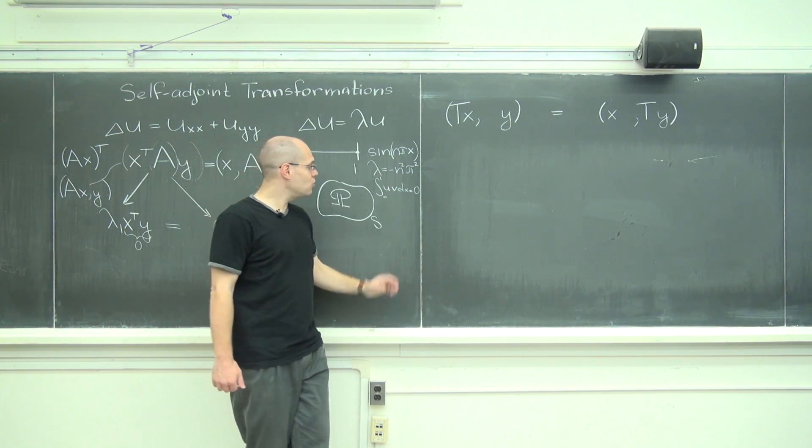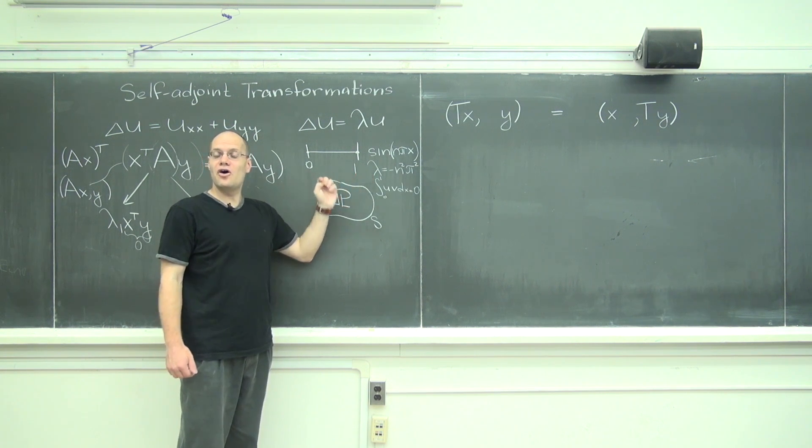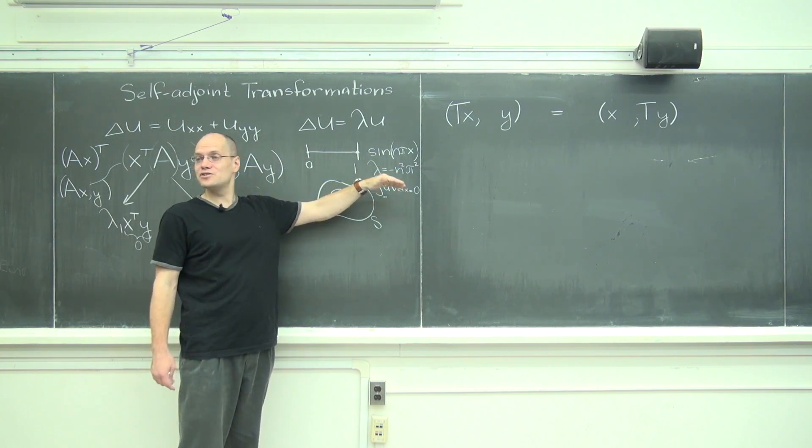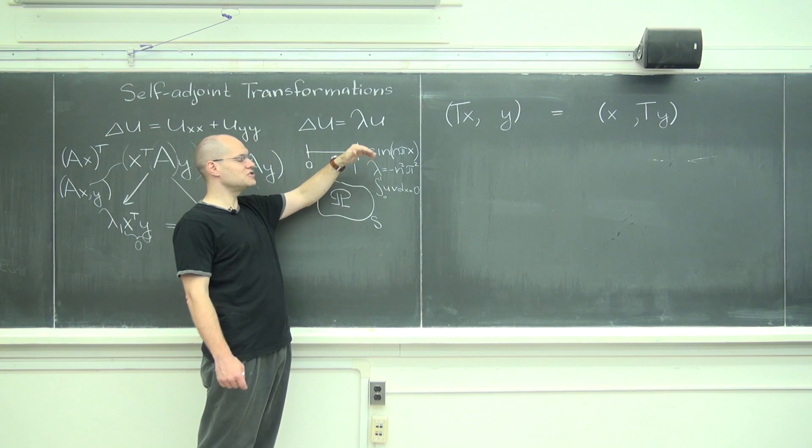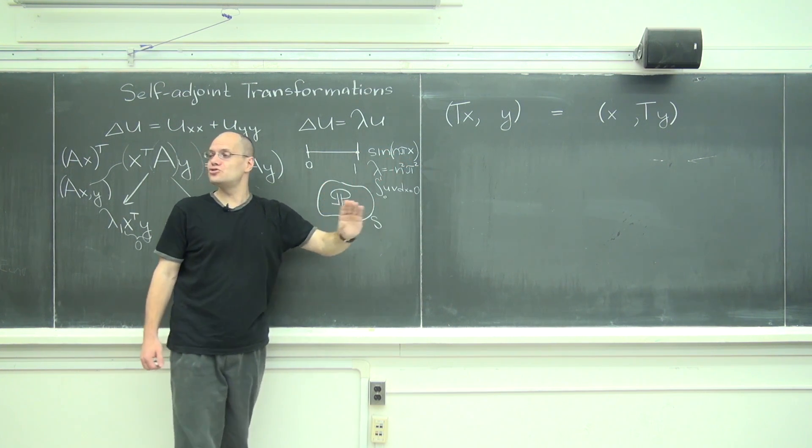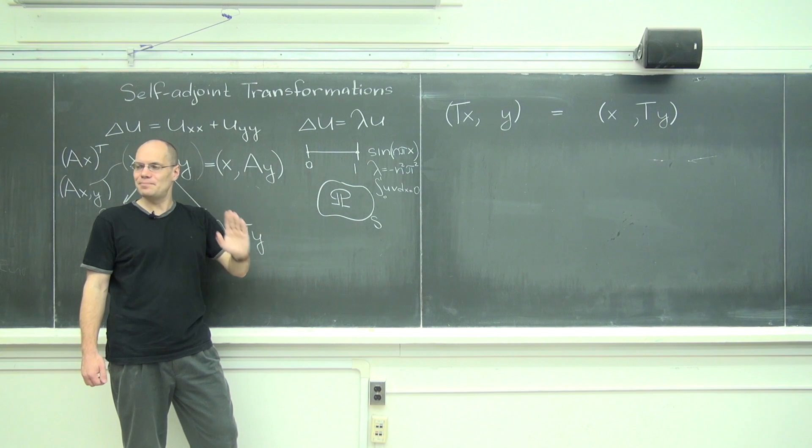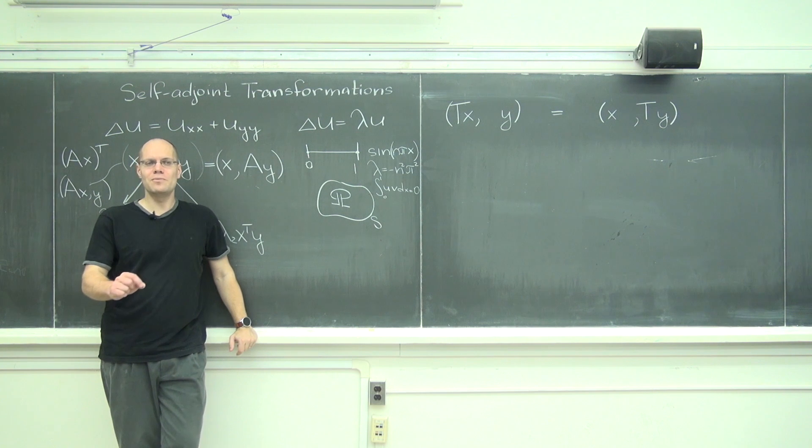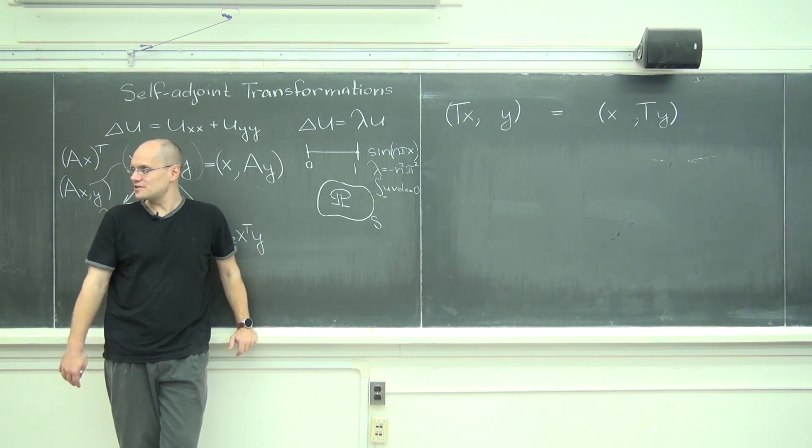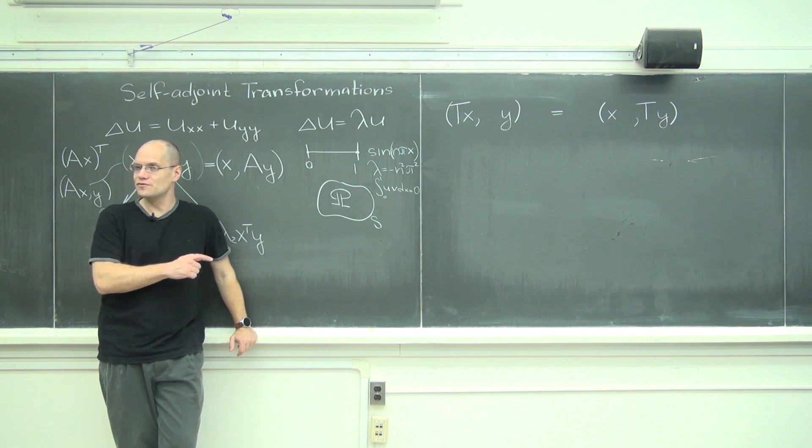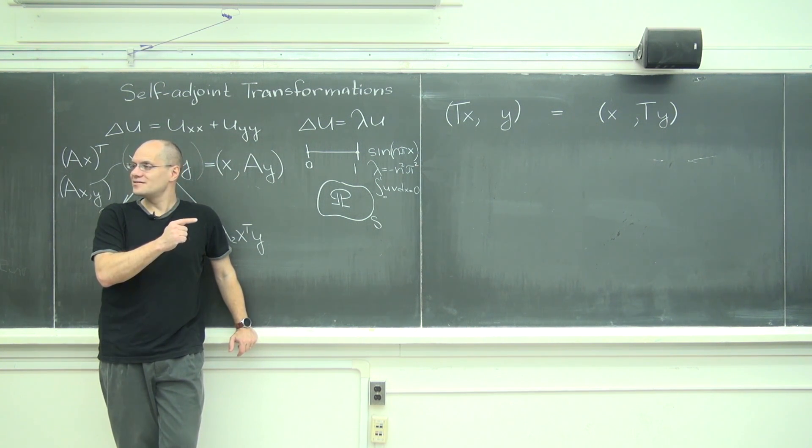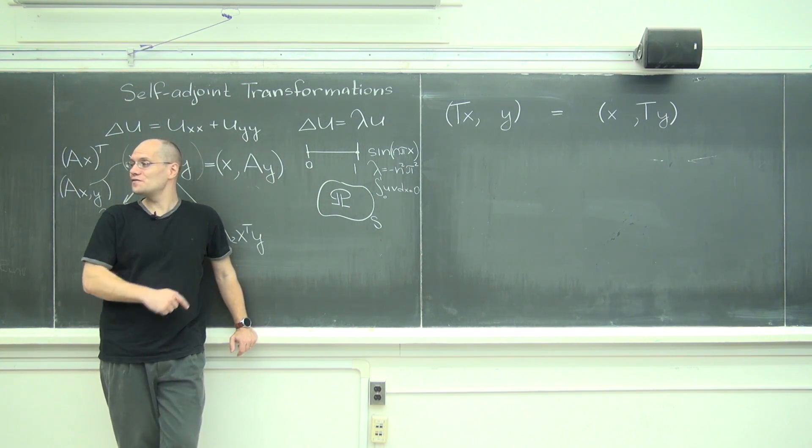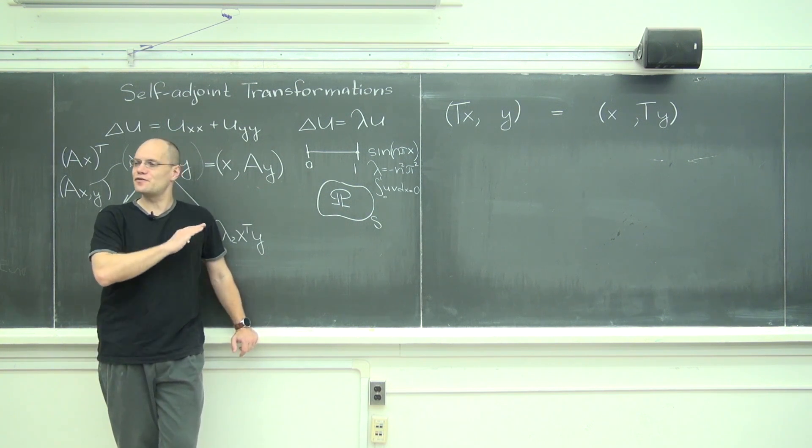And so to now prove this observation that all of the eigenvalues, okay, eigenvalues of the Laplacian are real and all of its eigenfunctions are orthogonal, all I need to do is to prove that the Laplacian is a self-adjoint transformation. So the moment I prove that, I get these properties for free. And then in the course of that proof there will also be a proof that it's negative definite, and therefore proves that all of the eigenvalues are negative, and you get all of that for free.